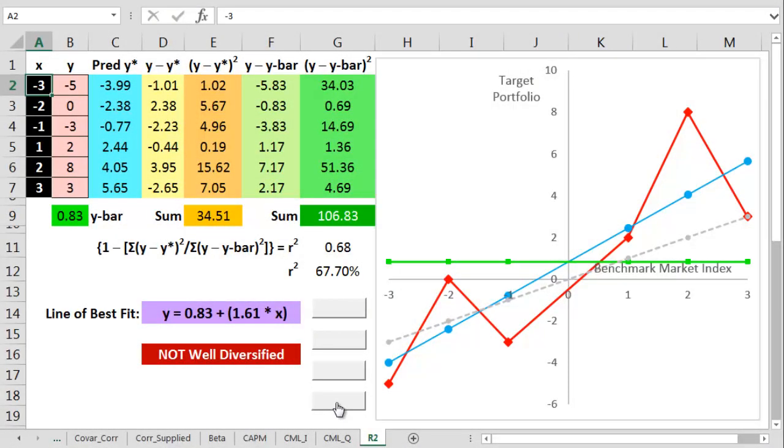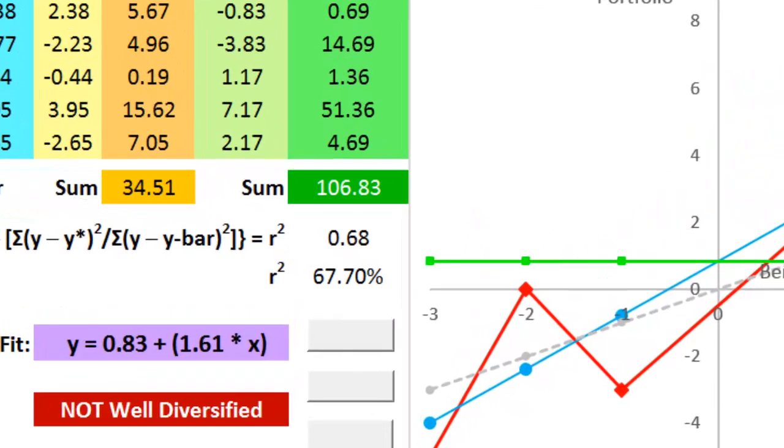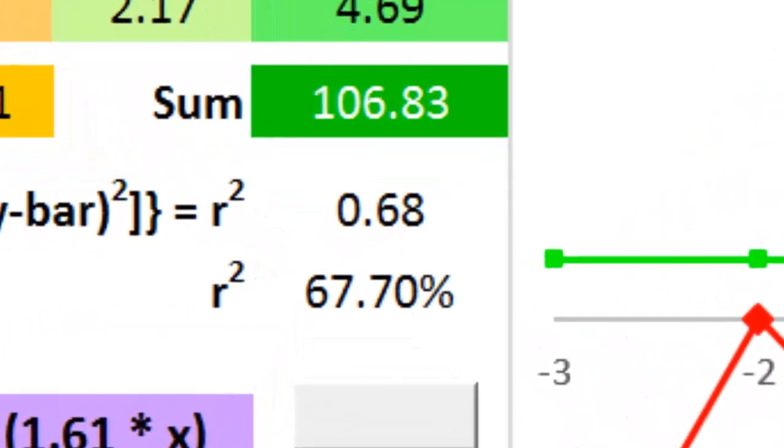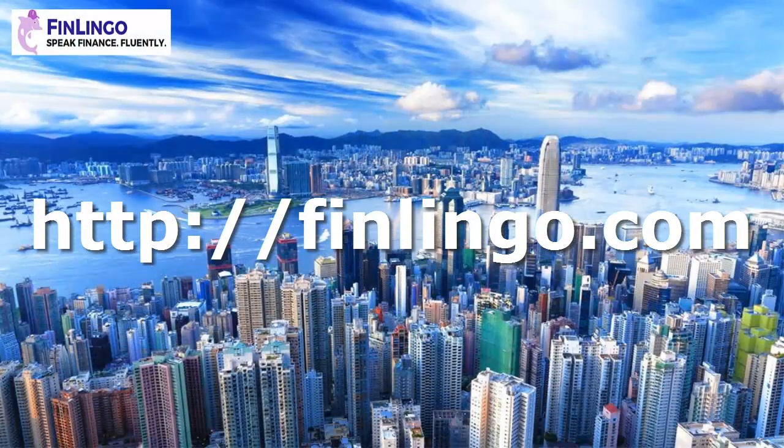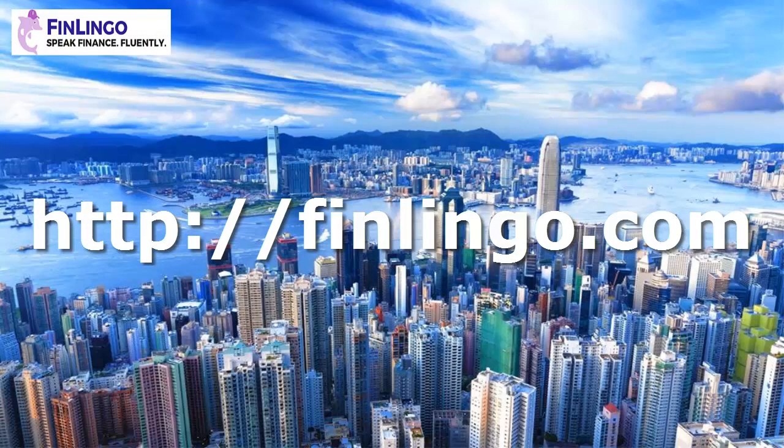So given a choice between a Sharpe ratio or a Treynor ratio, we should use the Sharpe ratio. Head on over now to finlingo.com to get an infinite number of questions on how to calculate Sharpe ratio and Treynor ratios, along with hundreds of other CFA-style questions. Finlingo. Speak finance fluently.